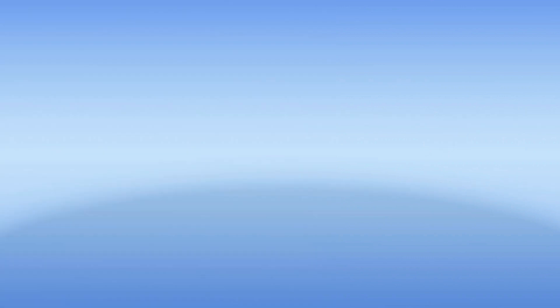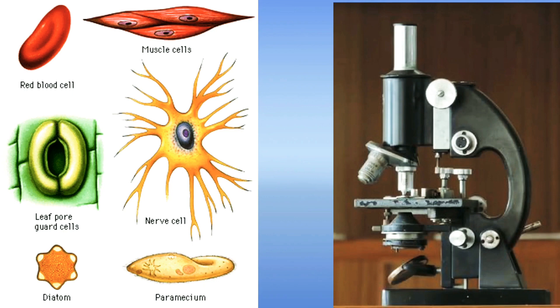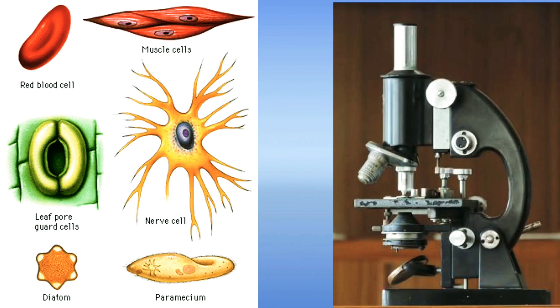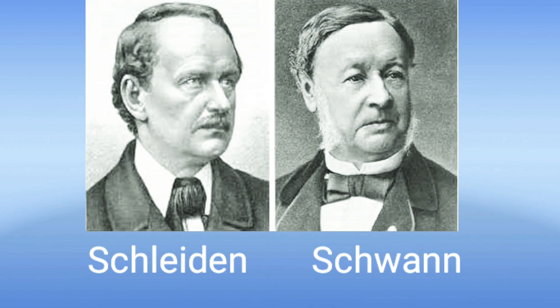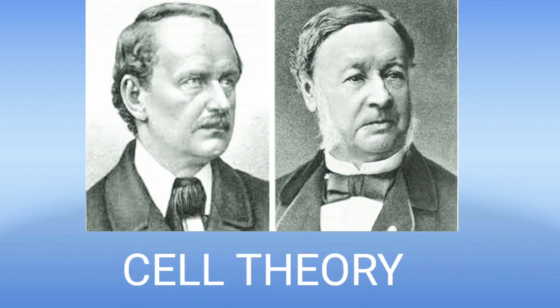With the invention of the microscope, scientists got to know the cell in complete details and they put forward the cell theory. Two German scientists, Schleiden and Schwann, put forward the cell theory which states that all living organisms are made up of cells. It also states that cell is a structural and functional unit of all living beings.